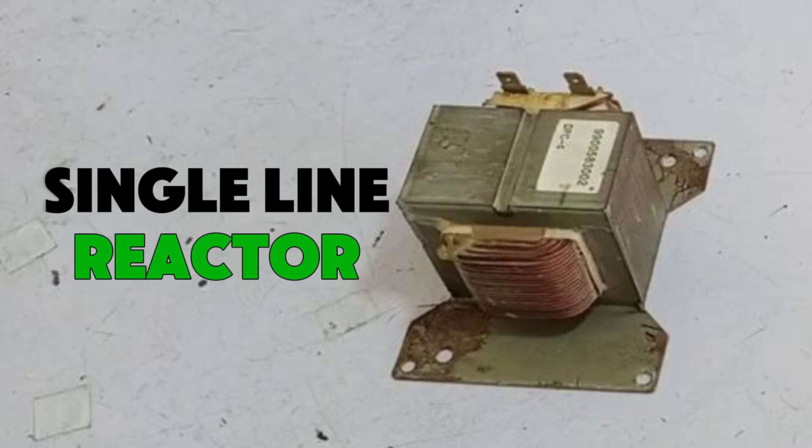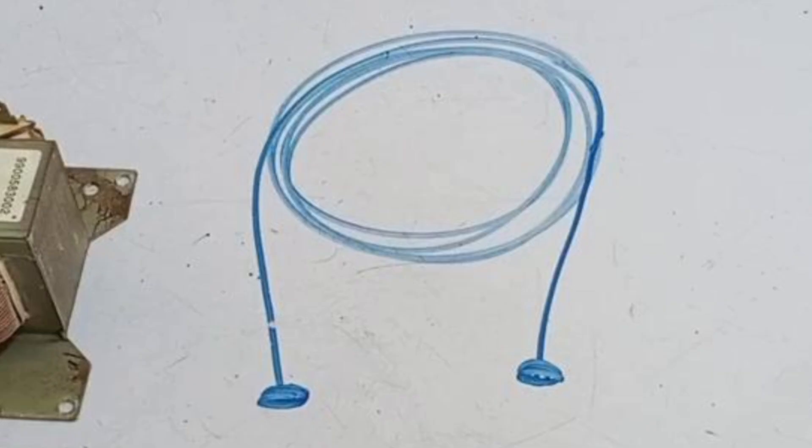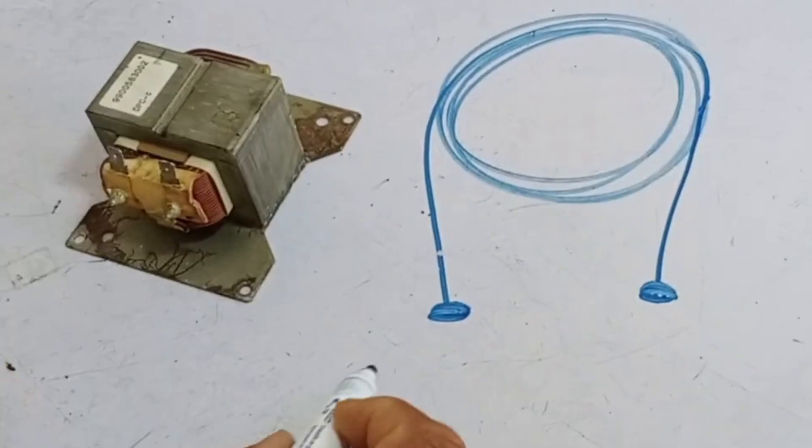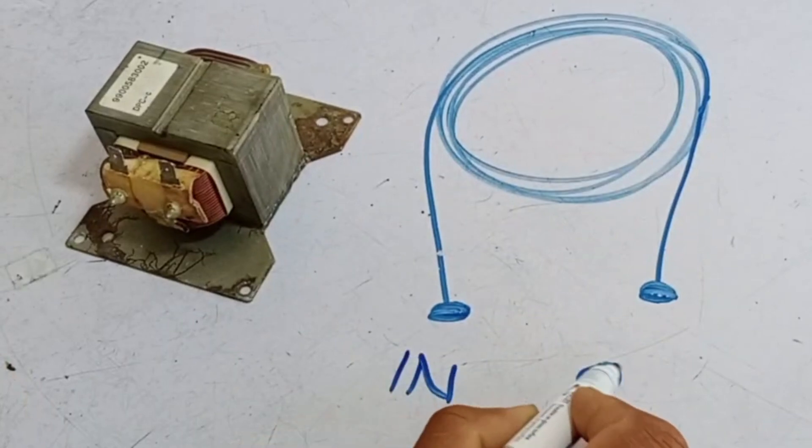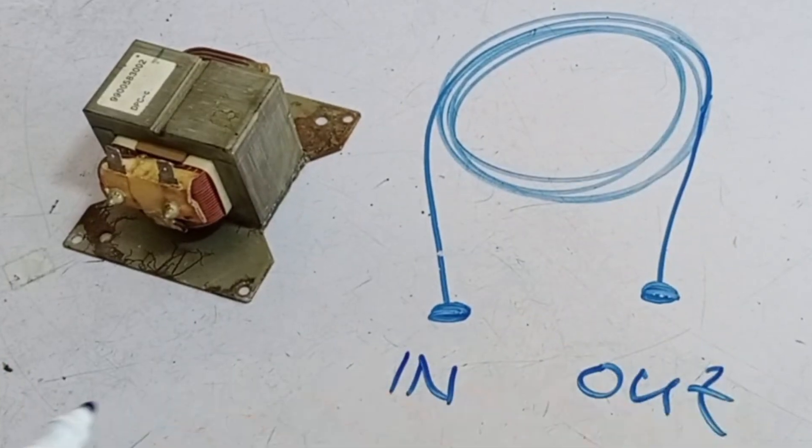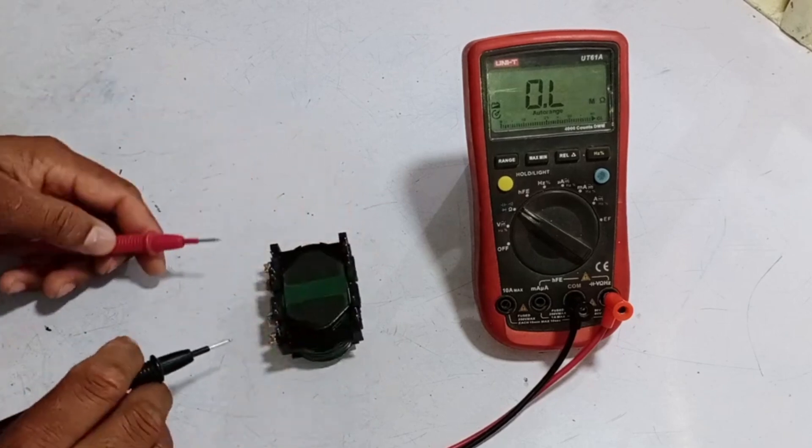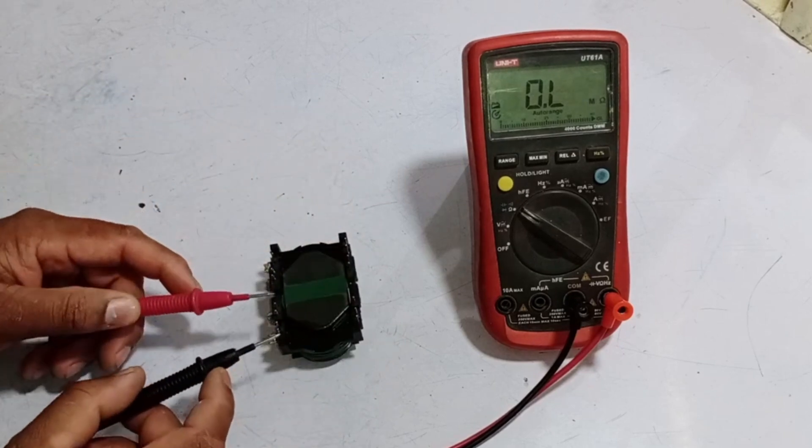Now, if we talk about this single line reactor, it contains a single coil that is wound in a circular manner. One side serves as the input, and the other side acts as the output. This is how it operates. Now, I will explain how to test it. There are eight points to check, and we will test them step by step.